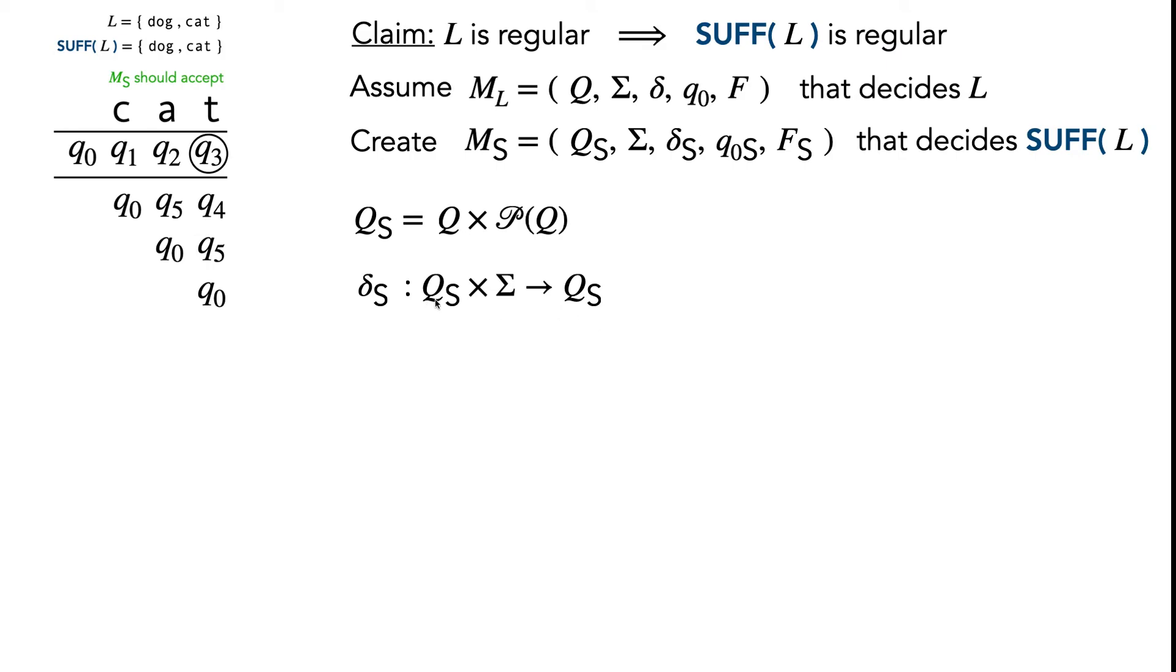It can even help to write it out substituting what we know each new state looks like. This might seem unwieldy, but this actually helps when we're writing out the function. We know δ_S is going to take in one old state, one set of old states, and one character.